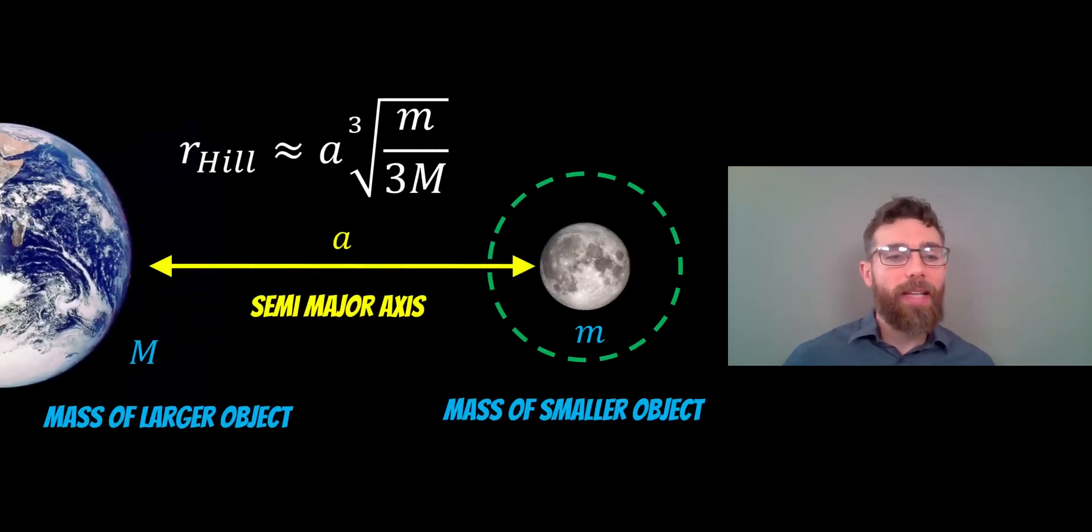So an example here we would have the Earth and the Moon. The equation for the hill radius is at the top there and it depends on the semi-major axis, which is the distance between the two objects, the mass of the larger object the Earth here, and the mass of the smaller object which would be the Moon.